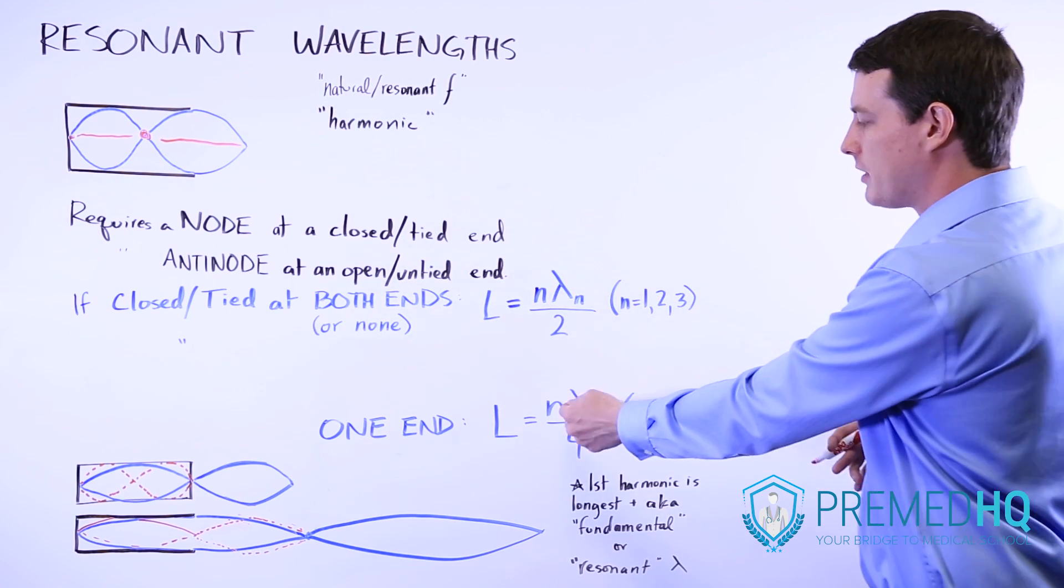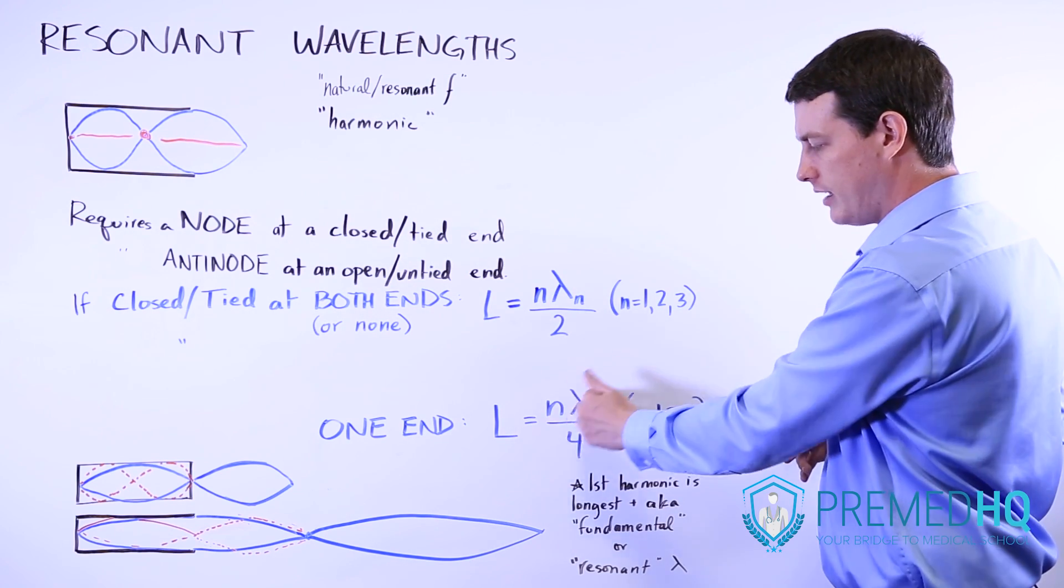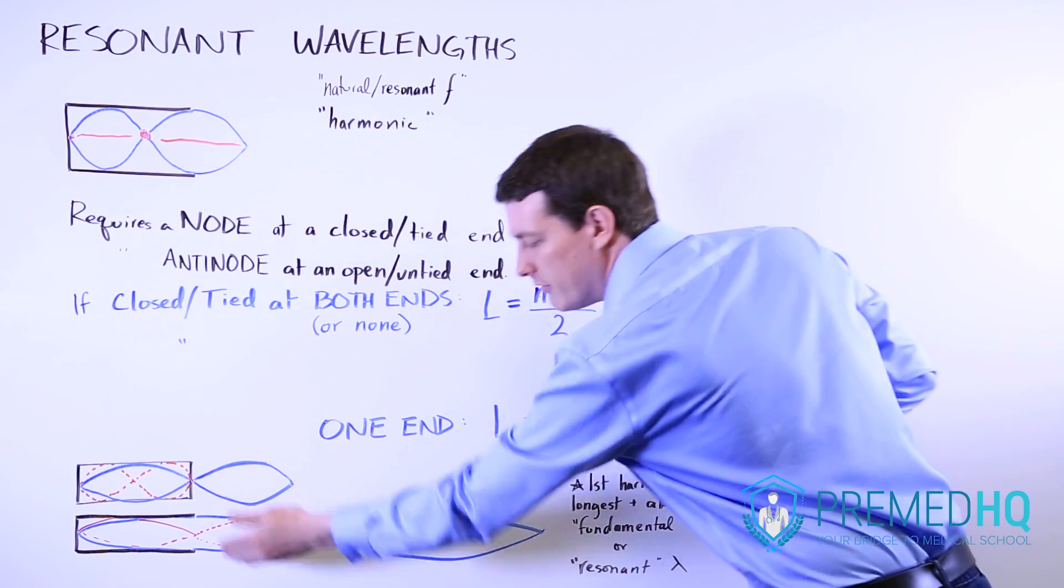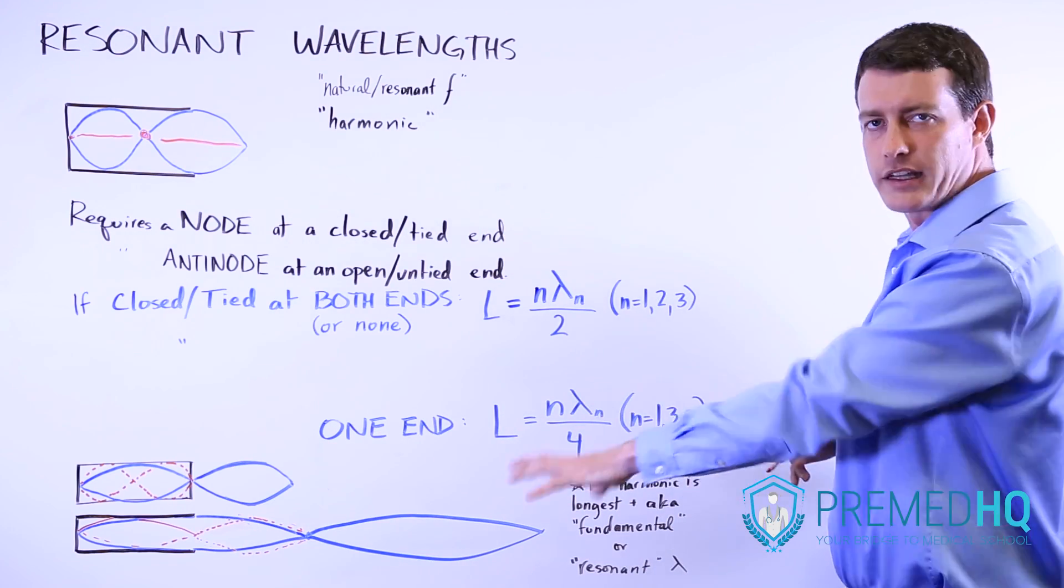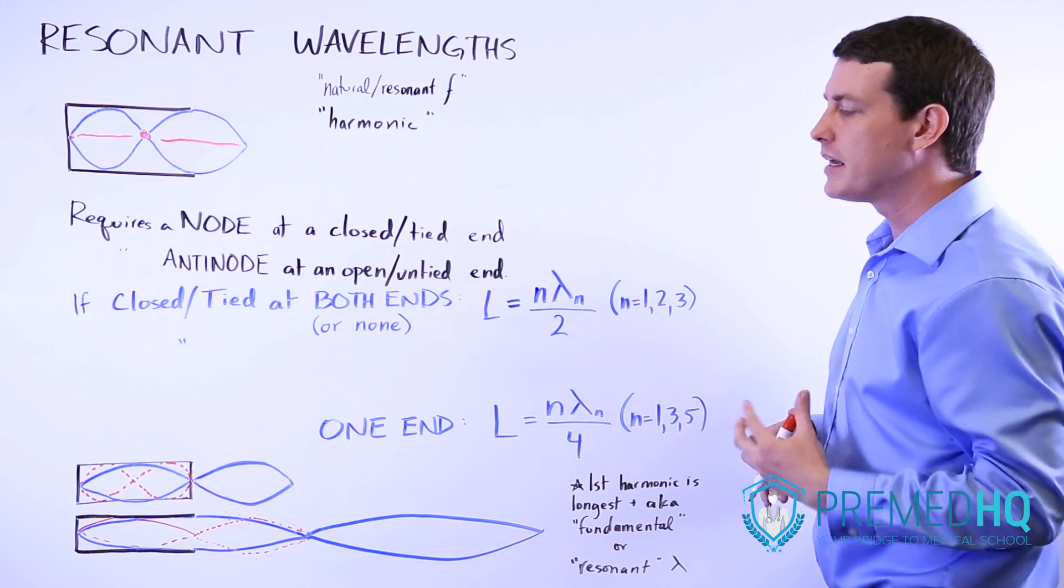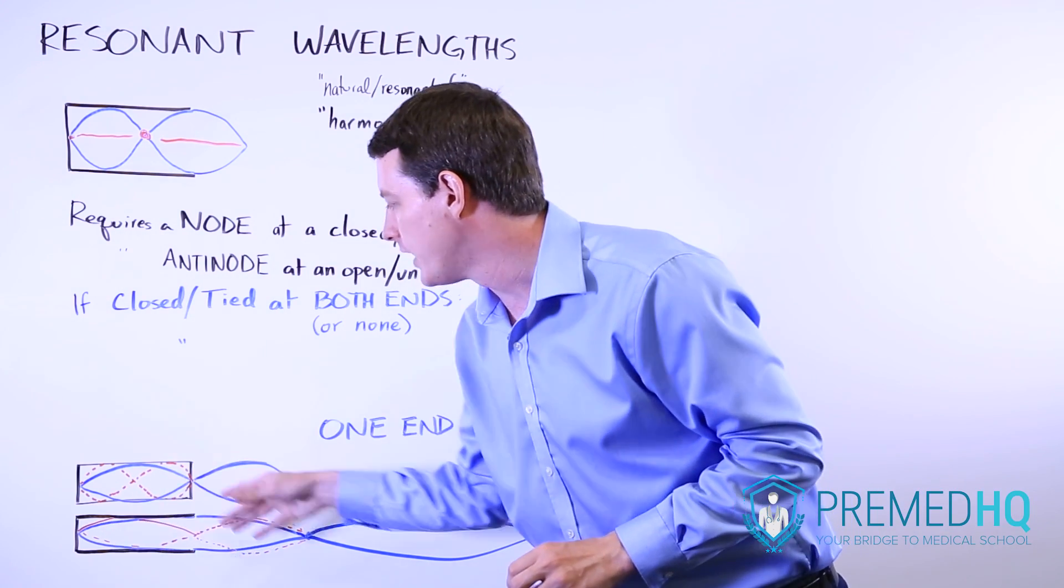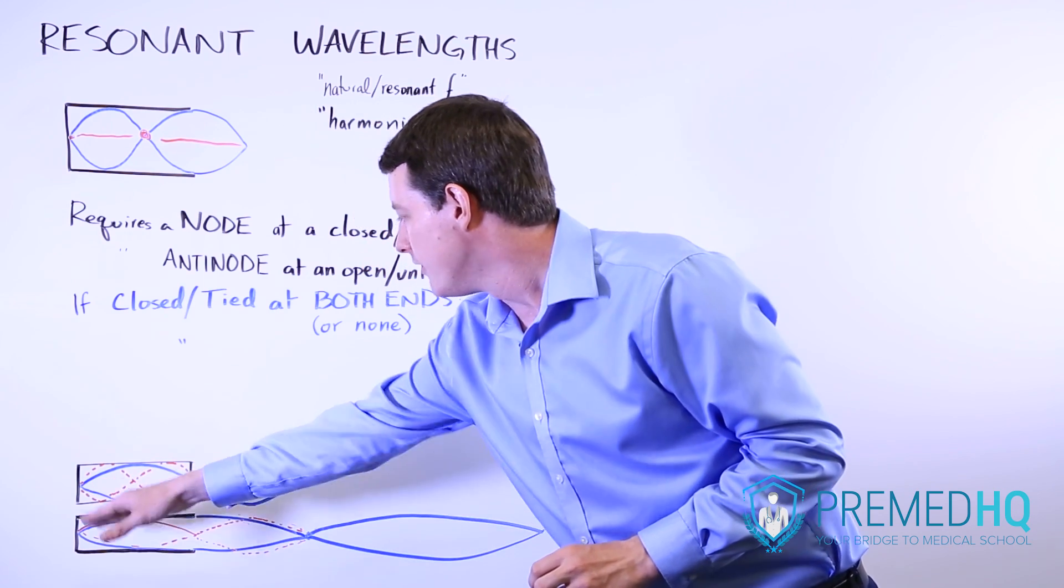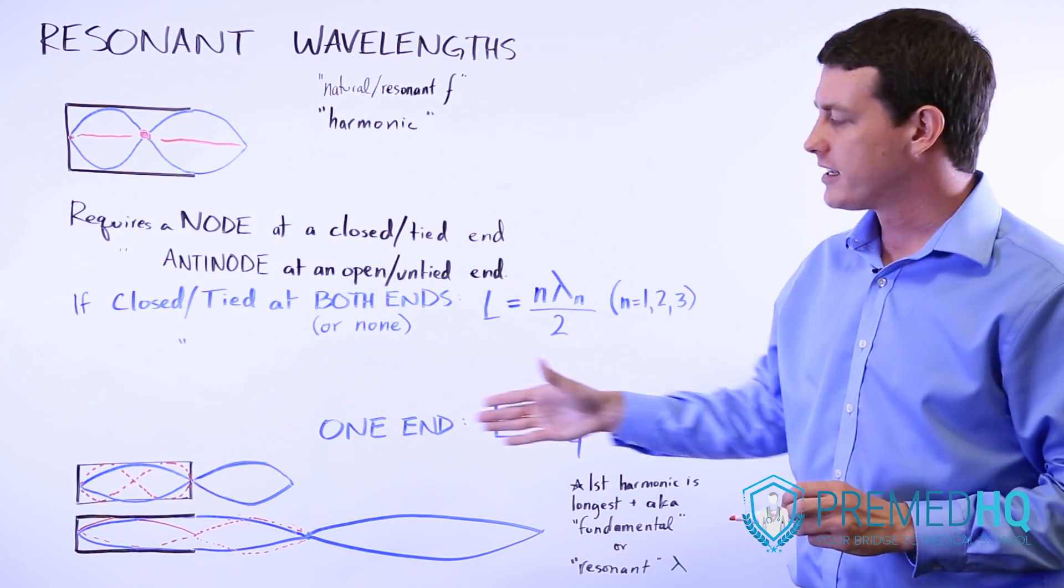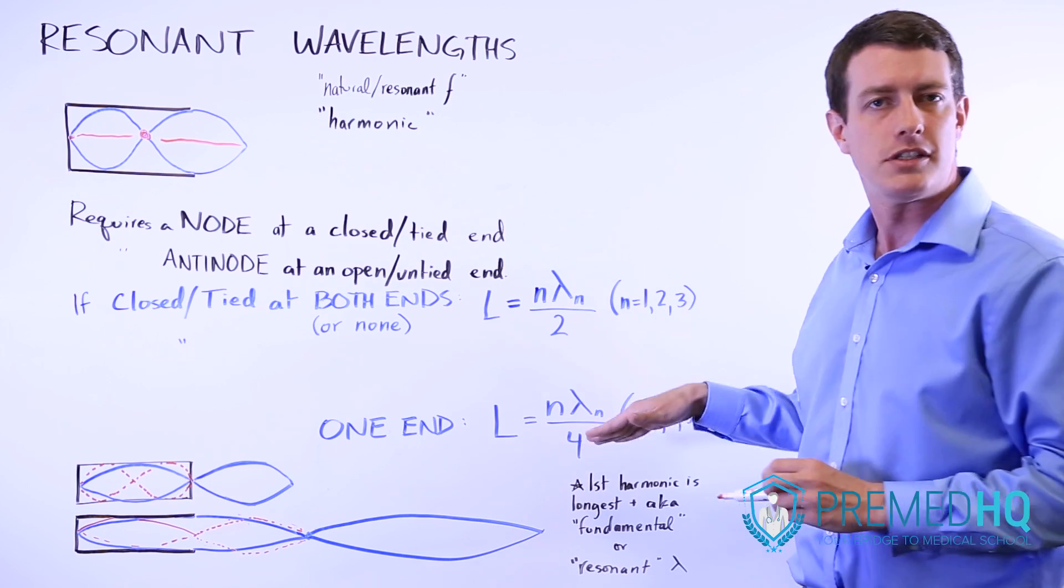That one is going to be 4 times as long as the chamber. And so if you were to use this same formula using n as 1, lambda sub n as the wavelength of this, you would have to divide that by 4 in order to get the length of the chamber. So it kind of makes sense that if the longest thing that satisfies this requirement of having a node here and an anti-node here, if that thing is 4 times as long as the chamber, you would have to divide by 4.